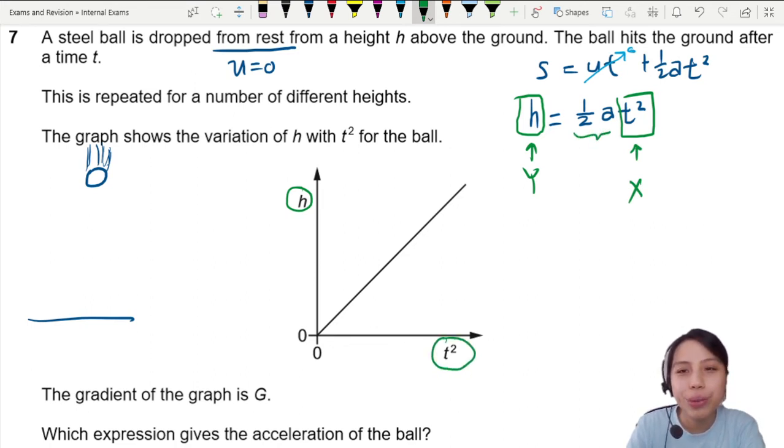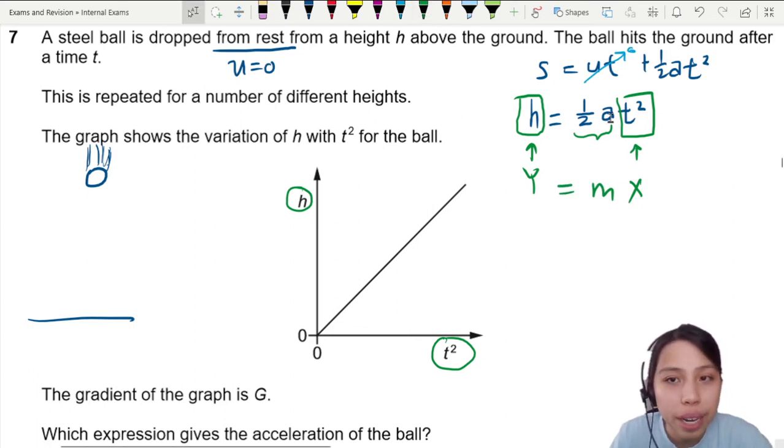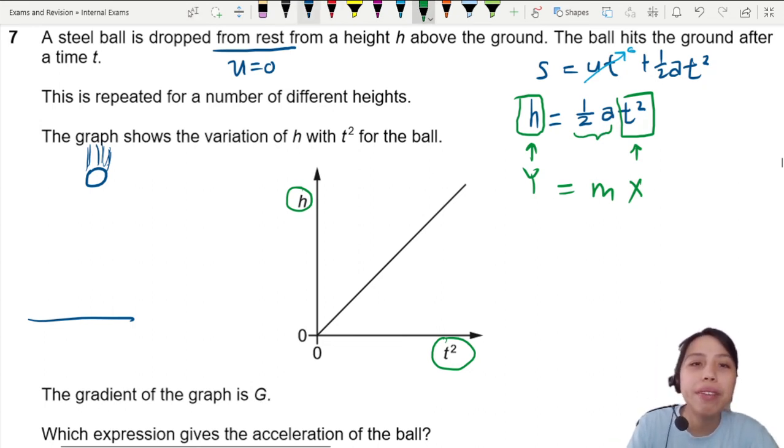That means everything in between here is going to be my gradient. y equals mx. The acceleration that we want to find is right here in terms of gradient. Based on the comparison to linear form, the gradient is half a.